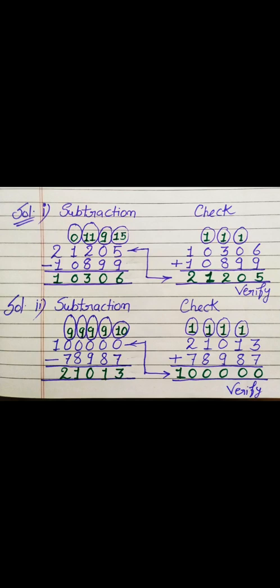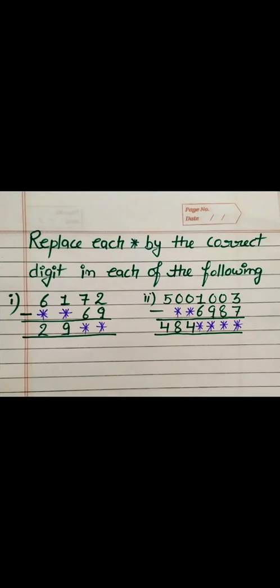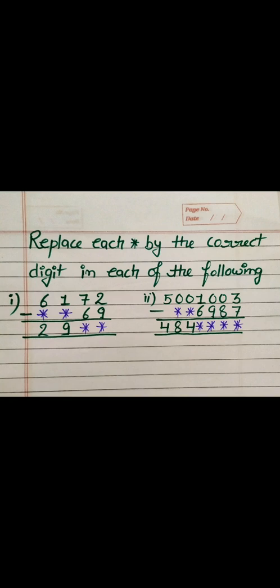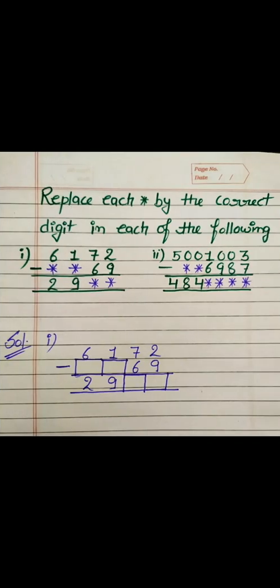Now let's solve another kind of question. Here we have to replace each asterisk with the correct digit. So here are the missing digits. First, we will replace these asterisks with boxes, as I have done.